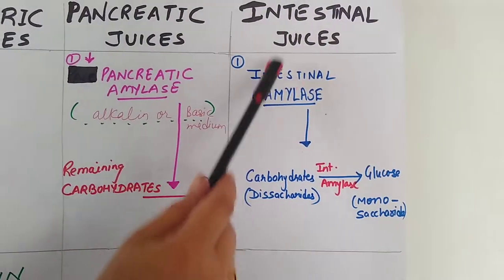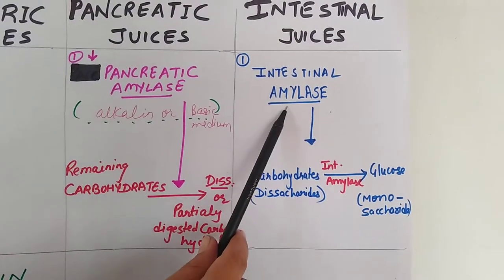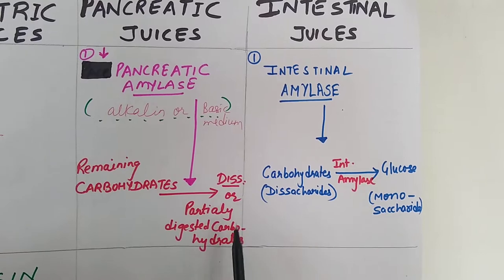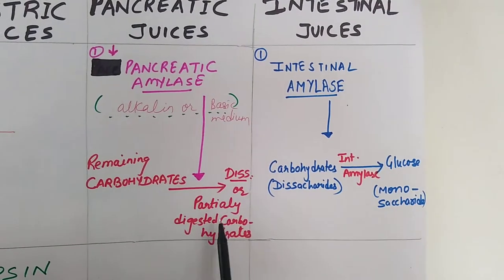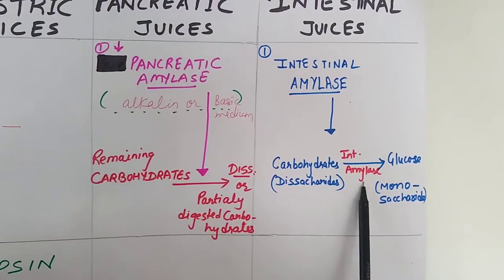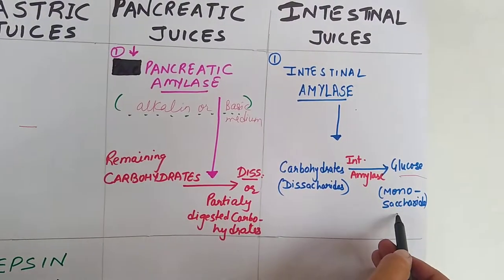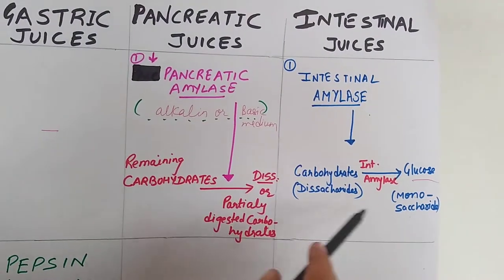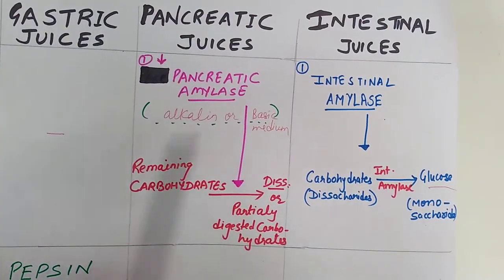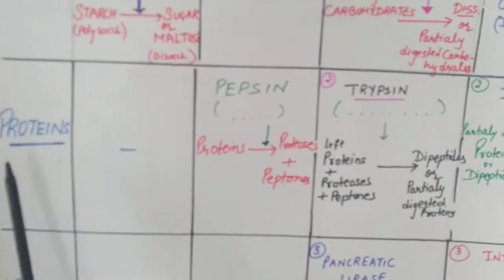When food moves forward, intestinal juices secrete intestinal amylase, the enzyme required for the digestion of carbohydrates. The carbohydrates partially digested by the pancreas — which may be disaccharides — are converted finally into glucose, which is a monomer or monosaccharide. This is the procedure of how carbohydrates are digested, starting from saliva with final digestion taking place in the intestine.